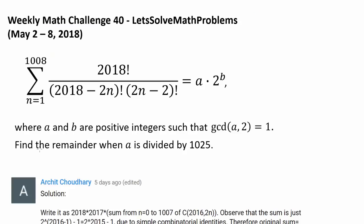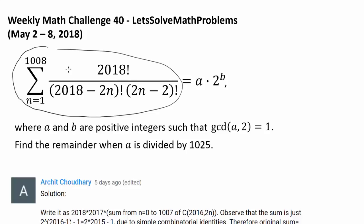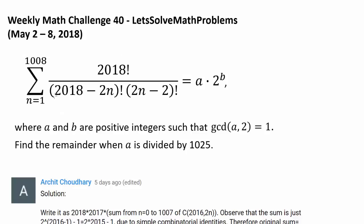We have to find the remainder when A is divided by 1025, and A may be really, really large. So how can we start this? I guess we can try to start by evaluating this summation. So let's look into it.